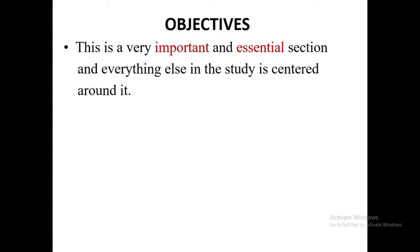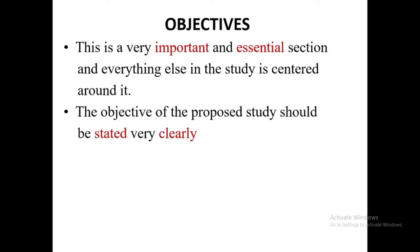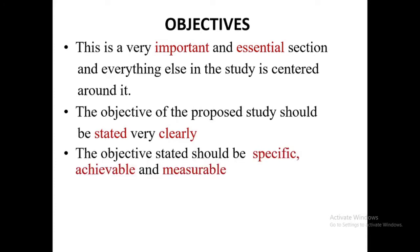Objective: this is a very important and essential section — everything else in the study is centered around it. The objective of the proposed study should be stated very clearly. The objective should be specific, achievable, and measurable. You have to think about whether it is possible within a given time. For example, if the budget is 2 million, your objective and research must be achievable within that budget.